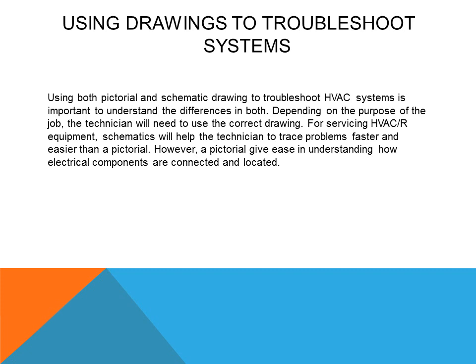Using drawings to troubleshoot systems is done daily by technicians to speed up the process of understanding how the system works and to determine what the problem is. Using both pictorial and schematic drawings to troubleshoot HVAC systems, it is important to understand the difference between both. Depending on the purpose of the job, the technician will use the correct drawing. For servicing HVAC and refrigeration equipment, schematics will help the technician trace the problem faster and easier than a pictorial. However, a pictorial gives ease in understanding how electrical components are connected and located.